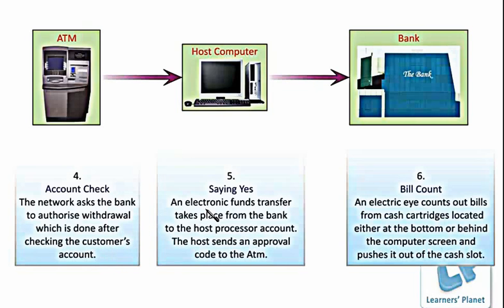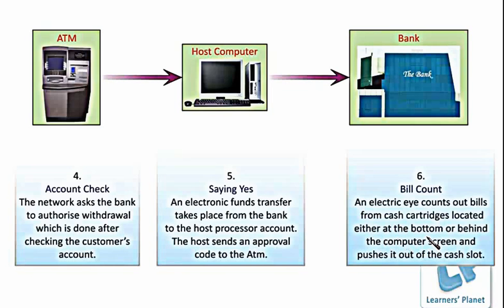If the bank says yes, an electronic funds transfer takes place from the bank to the host processor account. The host processor then sends an approval code to the ATM. The next step is bill count — an electric eye counts out bills from cash cartridges, located either at the bottom or behind the computer screen, and pushes it out of the cash slot.